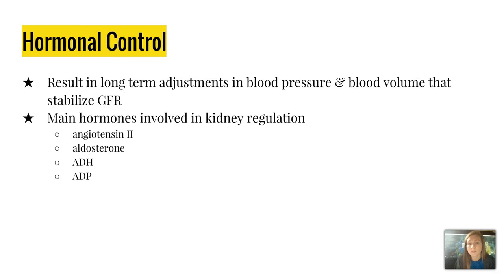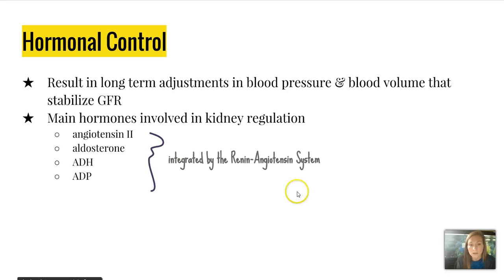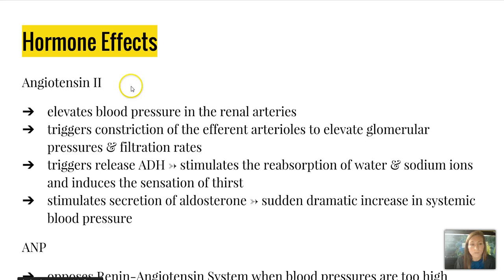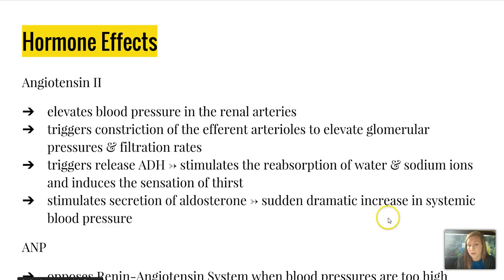Hormonal control results in long-term adjustments in blood pressure and blood volume that stabilize GFR. The main hormones involved are angiotensin II, aldosterone, ADH, and ANP, integrated by the renin-angiotensin system. Angiotensin II elevates blood pressure in the renal arteries, triggers constriction of efferent arterioles to elevate glomerular pressures and filtration rates, triggers release of ADH which stimulates reabsorption of water and sodium ions and induces thirst, and stimulates secretion of aldosterone, causing a dramatic increase in systemic blood pressure. ANP opposes the renin-angiotensin system when blood pressure is too high.